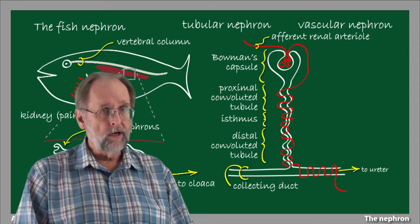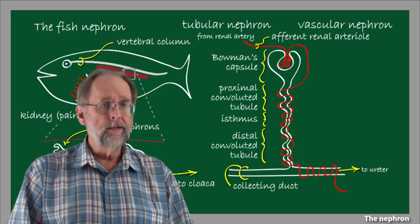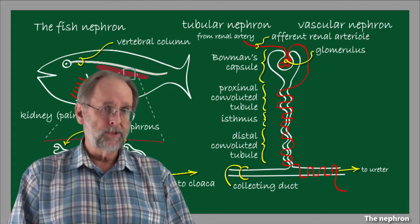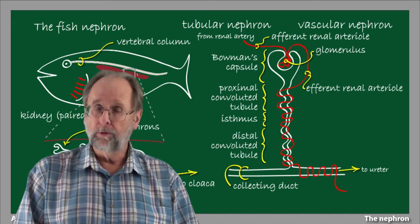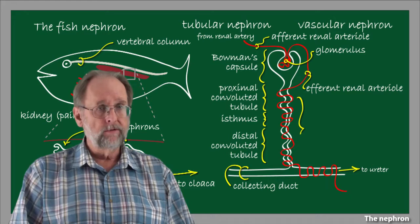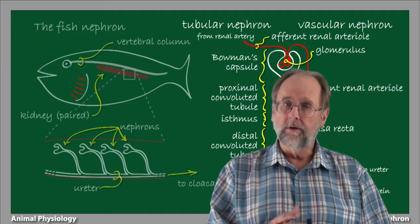The vascular nephron starts with an afferent renal arteriole, which is derived ultimately from the renal artery. This feeds into a complicated capillary plexus, called the glomerulus, that sits nestled within the cup of the Bowman's capsule. From the glomerulus, blood drains into the efferent renal arteriole, and then into another capillary plexus that wraps around the convoluted tubules and collecting ducts known as the vasa recta. Blood from the vasa recta then drains into the renal vein.